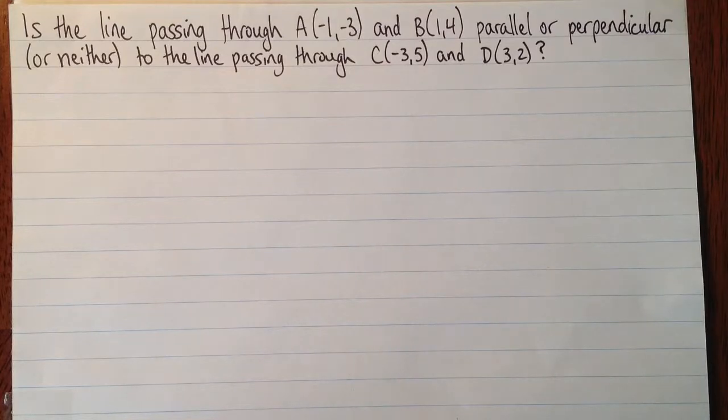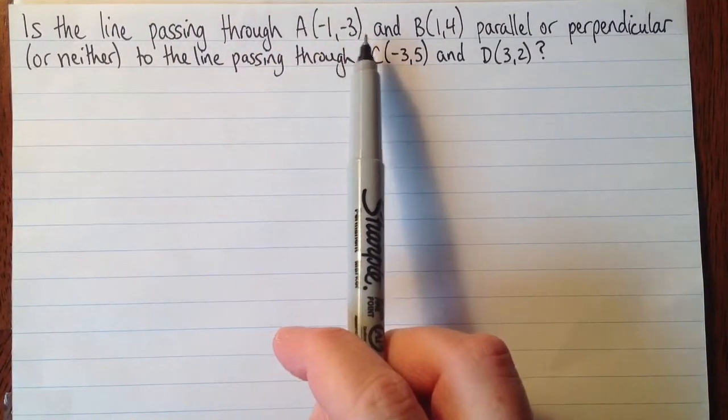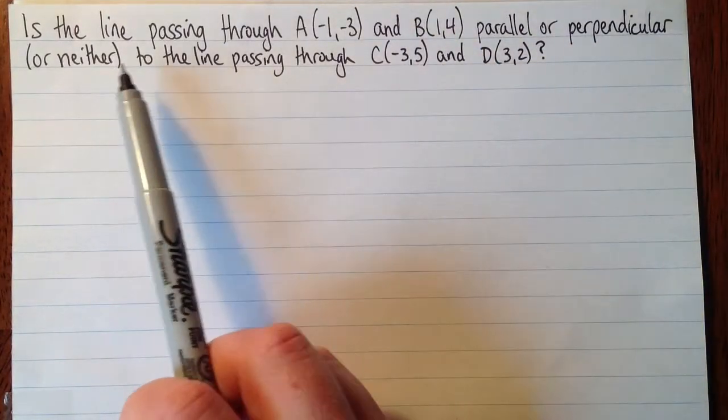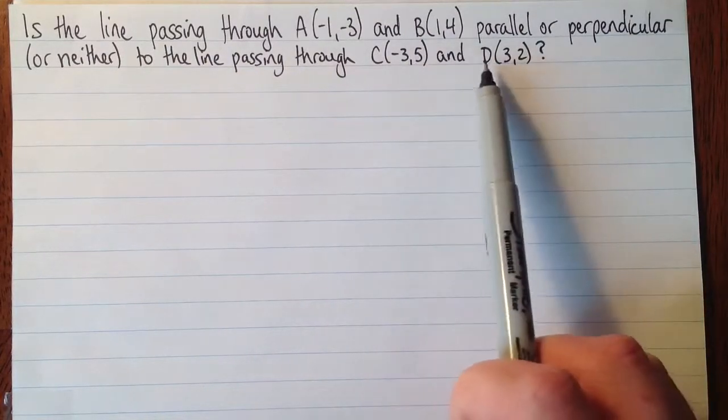Okay, so here's an example of a question we might be asked to solve. Is the line passing through A(1,3) and B(1,4) parallel or perpendicular or neither to the line passing through C(-3,5) and D(3,2)?